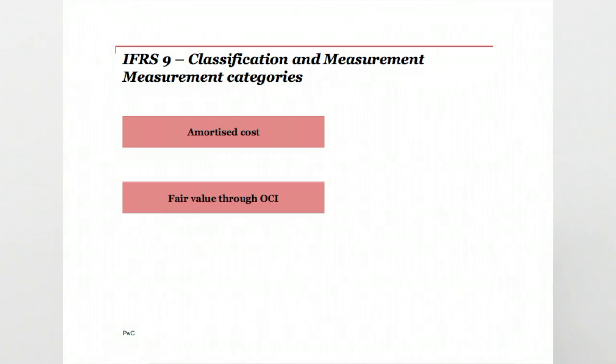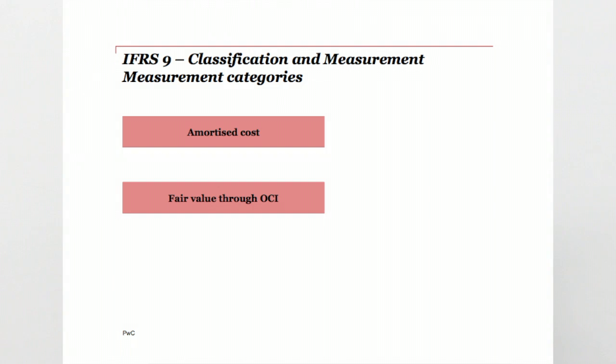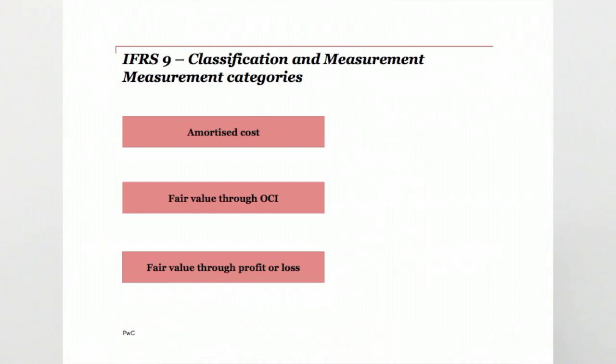IFRS 9 has three measurement categories for financial assets: amortised cost, fair value with changes going through OCI or other comprehensive income, and finally fair value with changes going through the income statement. In deciding which category to use, a company has to think about two tests. The first is the business model test — why are you holding the asset? That's the one we're going to focus on today. The next is what's called the cash flow characteristics test, whether cash flows are solely payments of principal and interest. We'll talk more about that next time.